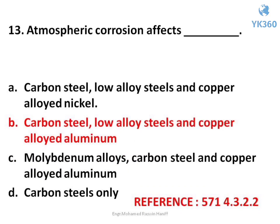Question number 13. Atmospheric corrosion affects — options are: A. Carbon steel, low alloy steels and copper alloy nickel, B. Carbon steel, low alloy steels and copper alloy aluminum, C. Molybdenum alloys, carbon steel and copper alloy aluminum, D. Carbon steels only. Answer is option B. Carbon steel, low alloy steels and copper alloy aluminum.